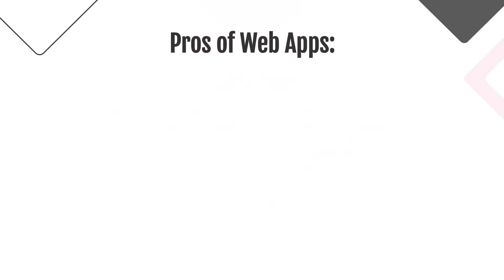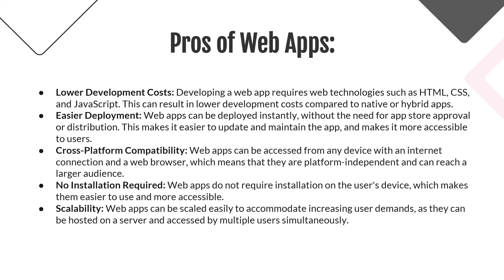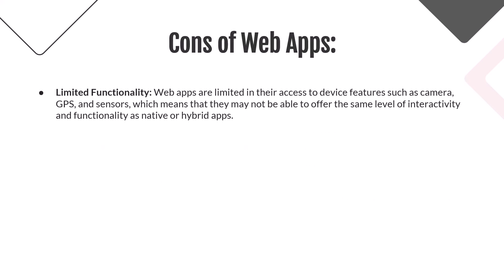The main pros of web apps are lower development costs and easier deployment. Developing a web app requires web technologies such as HTML, CSS, and JavaScript, which results in lower development costs compared to native or hybrid apps. Web apps are easier to update and maintain. They can be accessed from any device with an internet connection and a web browser, and do not require installation, making them easier to use and more accessible. The main con is that web apps are limited in their access to device features such as cameras, GPS, and sensors, which means they may not offer the same level of interactivity and functionality as native or hybrid apps.